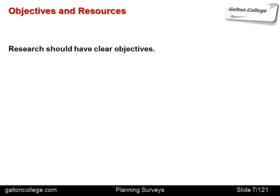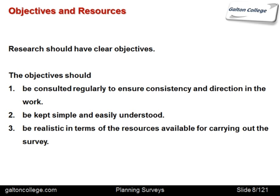Now the objectives and resources. Research should have clear objectives. The objectives should be consulted regularly to ensure consistency and direction in the work. Researchers should keep an eye on the objectives at all times to make sure that the work is consistent and following the line that was intended. It should be simple and easy to understand the objectives — if they're complex, it's easy to get lost and lose the focus of the research. The objectives of the research should be simple and easily understood.